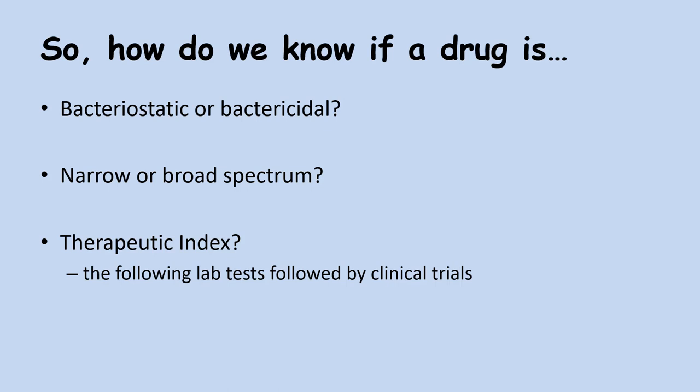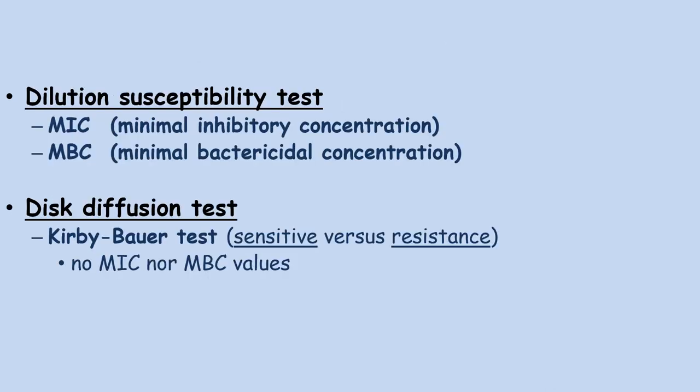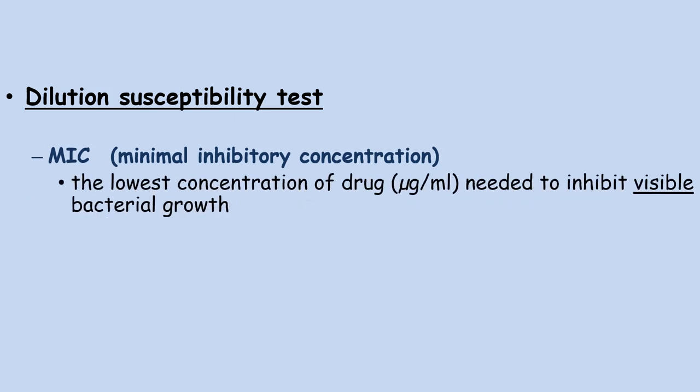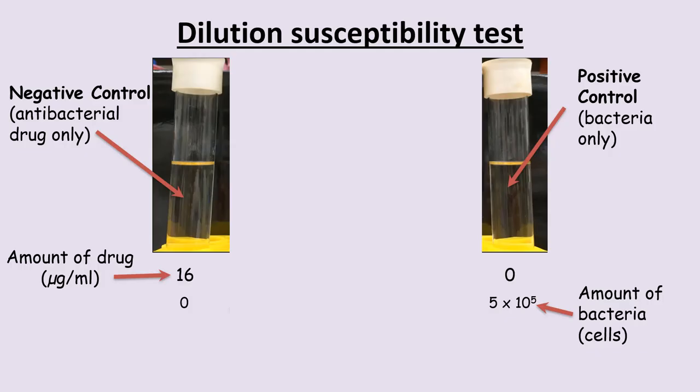To determine whether an antibacterial agent is bacteriostatic or bactericidal, two tests can be performed: the dilution susceptibility test and the disc diffusion test. The dilution susceptibility test identifies the lowest concentration of antibacterial reagent needed to visibly inhibit growth — called the minimal inhibitory concentration, or MIC. This assay is performed in a broth, either in test tubes or microtiter plates. On the left is a negative control tube and on the right is a positive control, with a series of tubes in between.